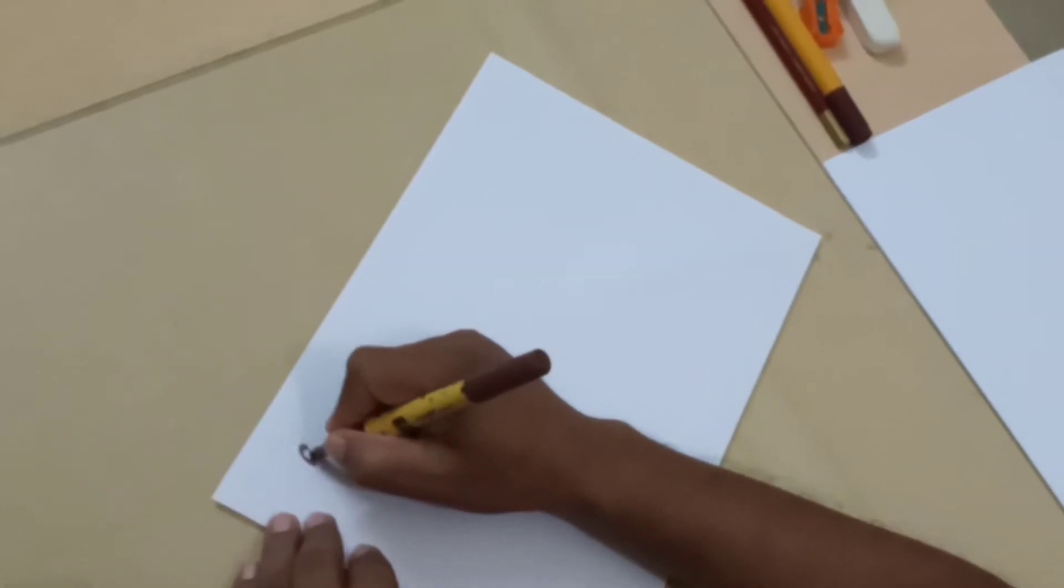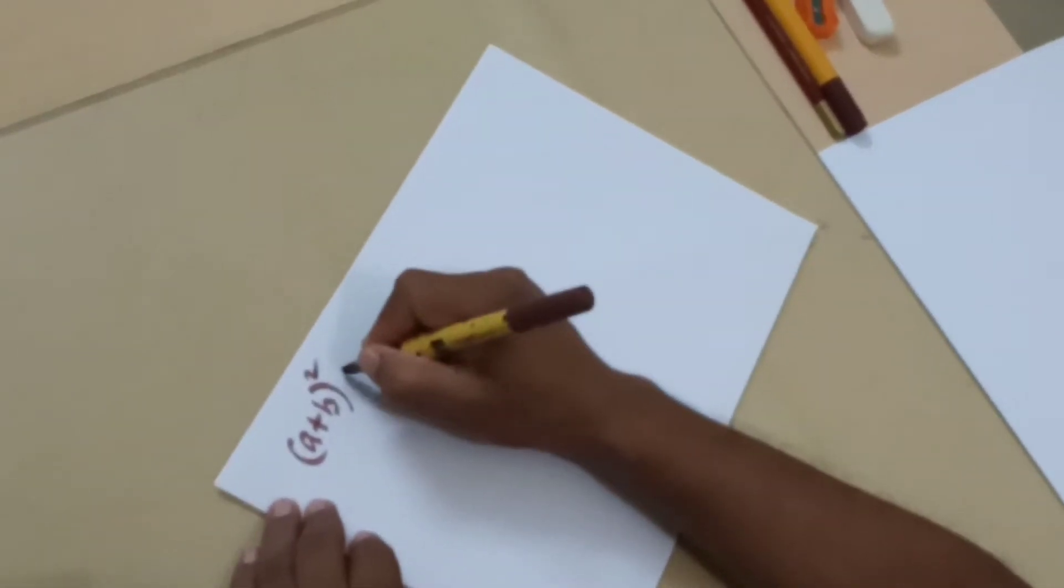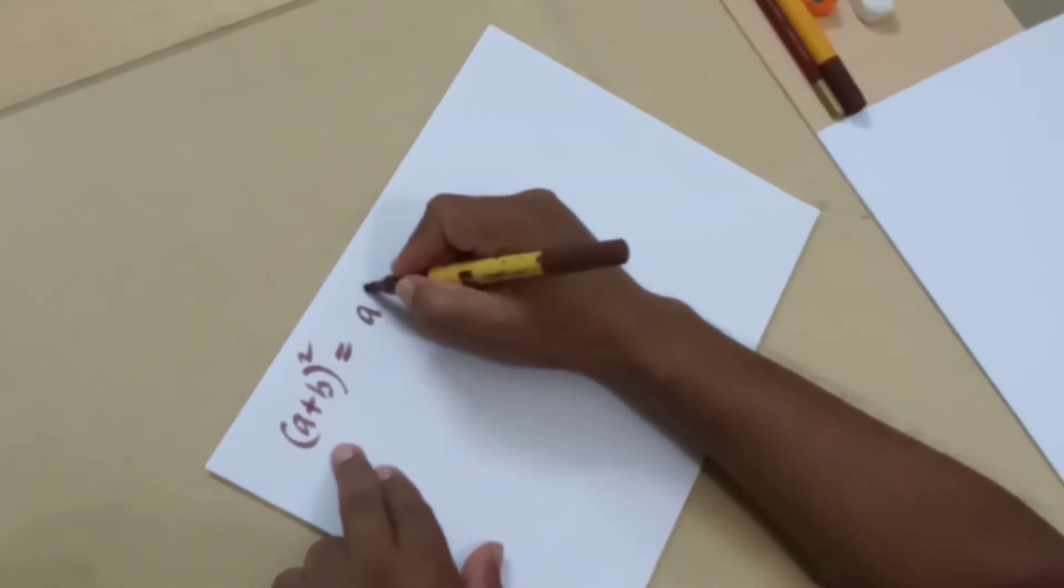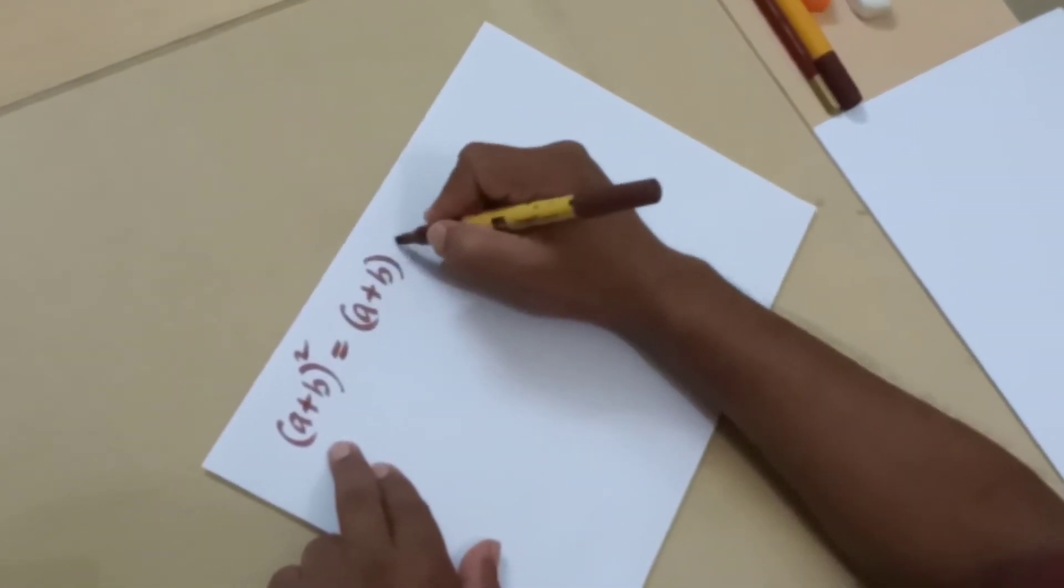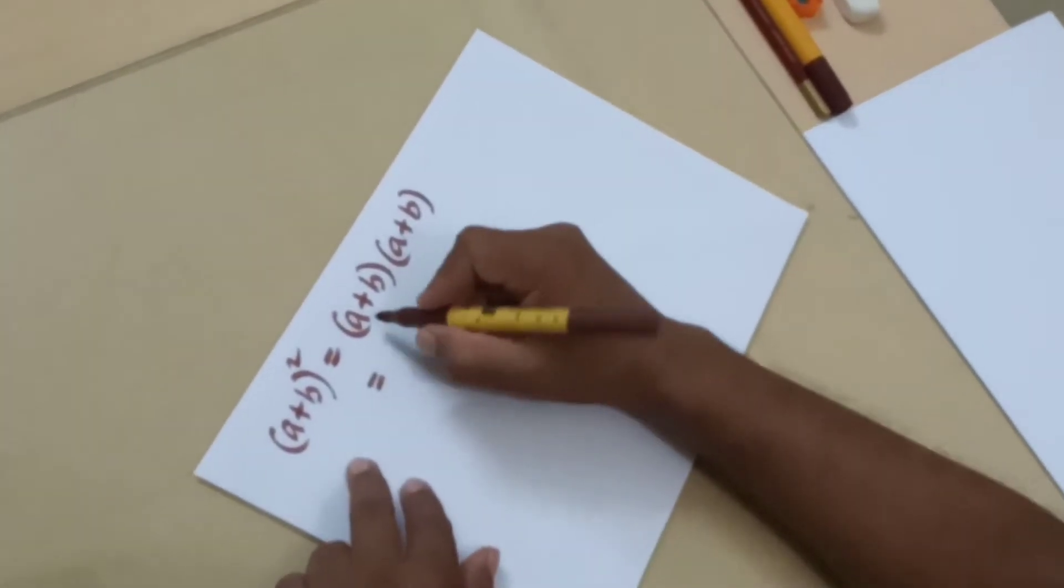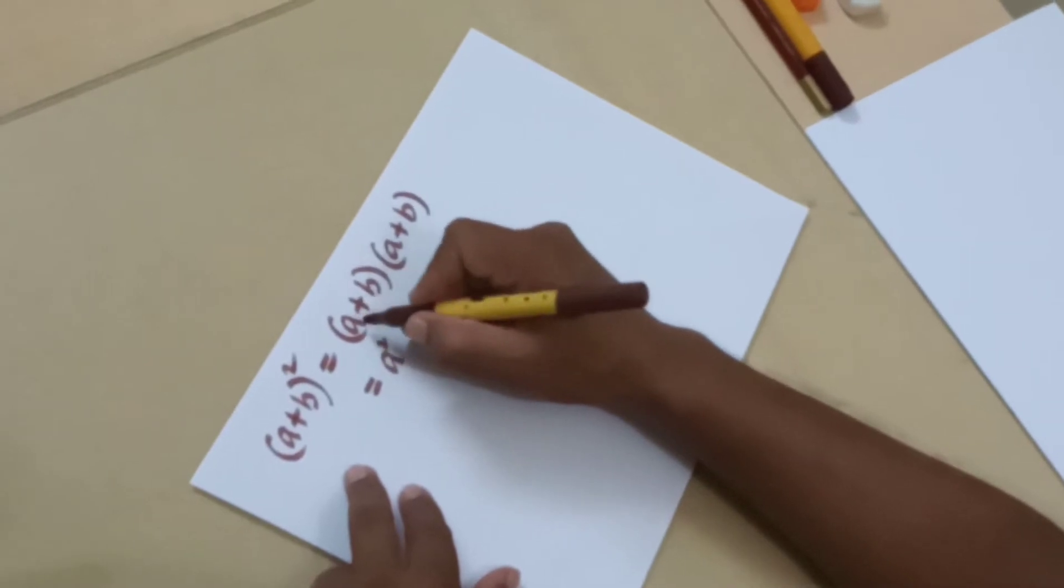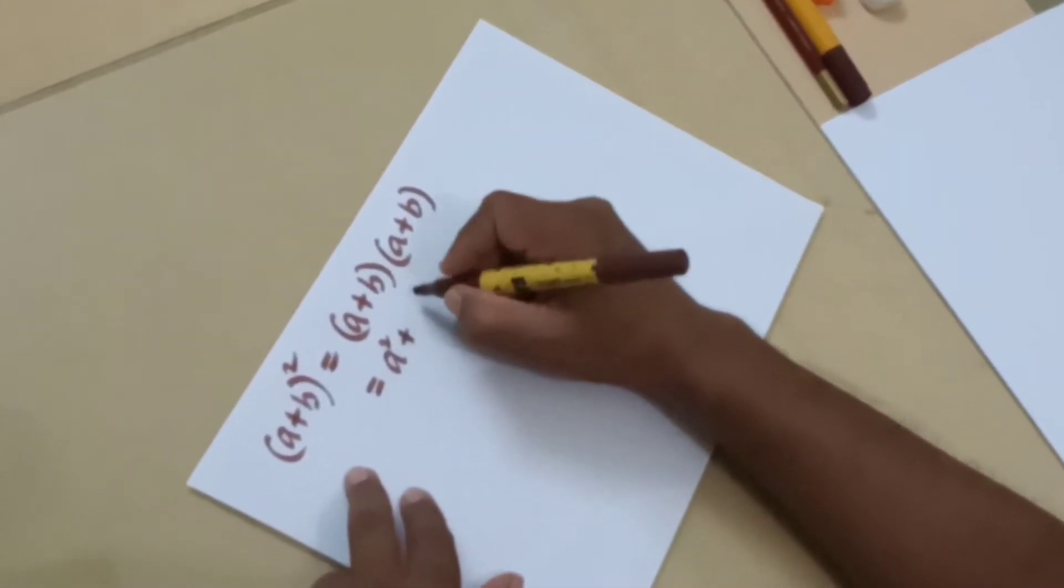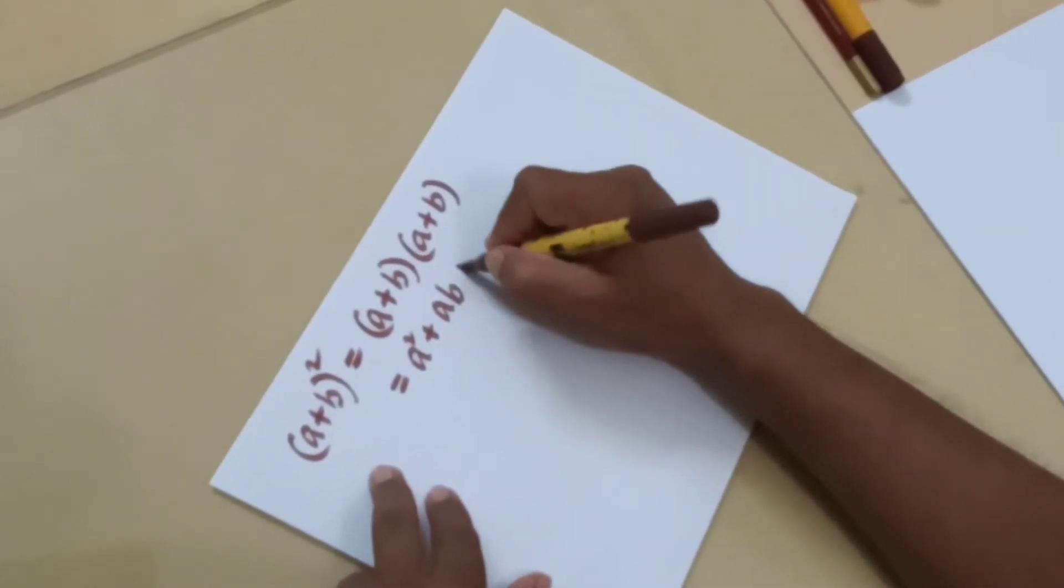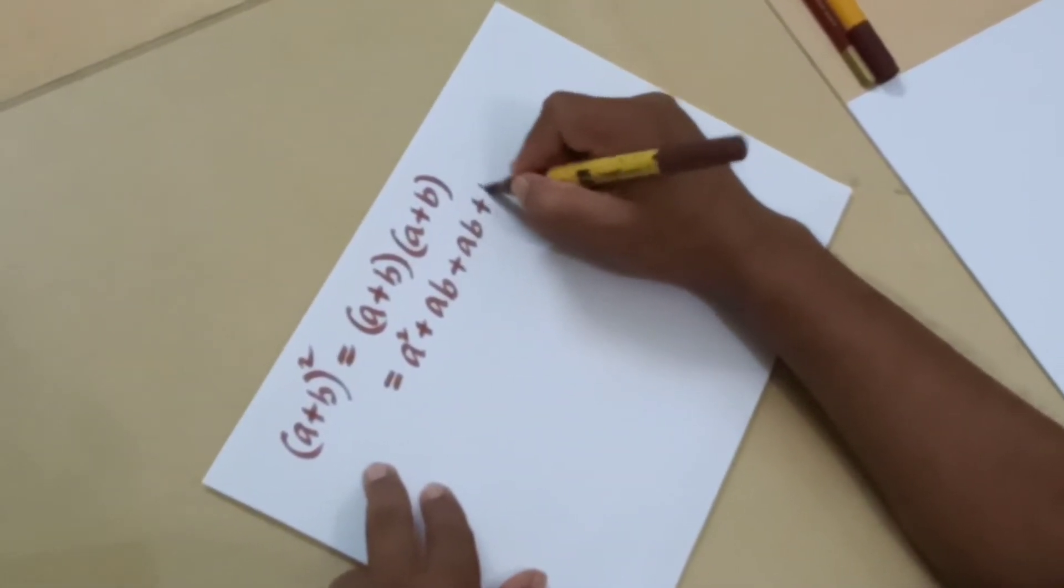So let us look at this algebraic expression a plus b whole squared. What does that mean? It means that a plus b is multiplied by a plus b. Now when a is multiplied by a we get a squared. When a is multiplied by b we get ab. Now when b is multiplied by a we get ab and when we multiply b into b we get b squared.